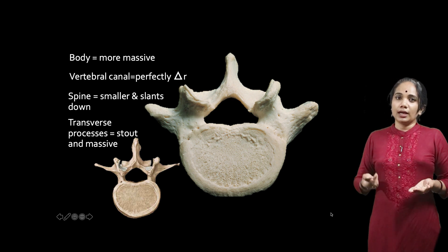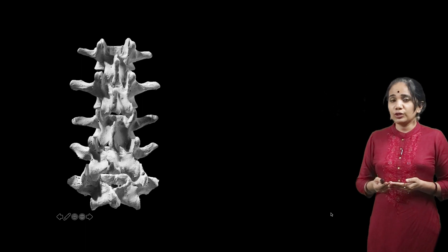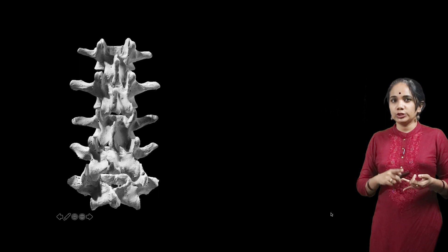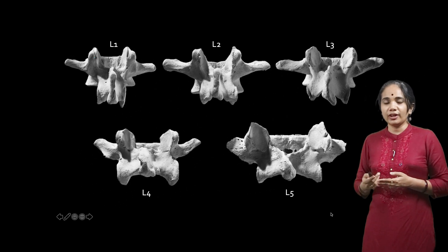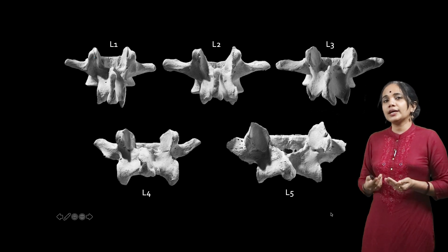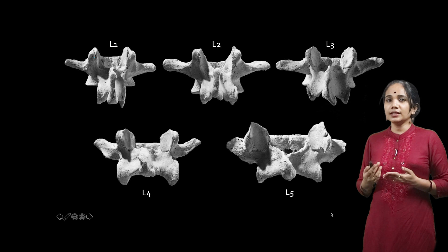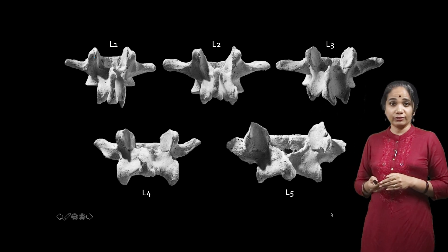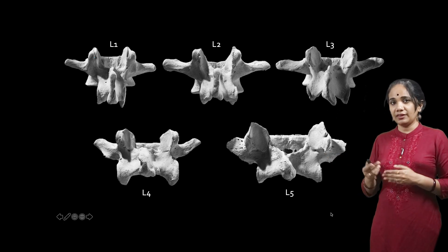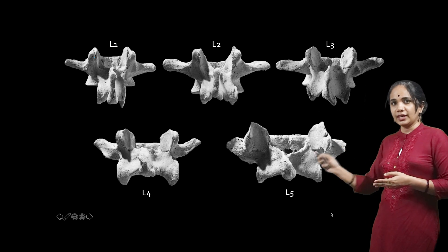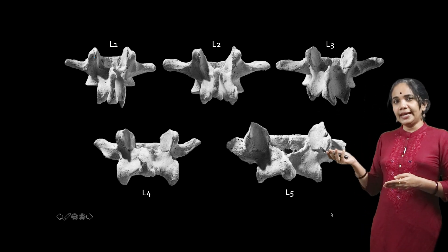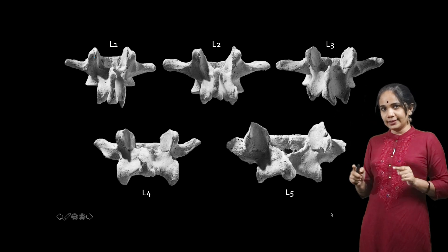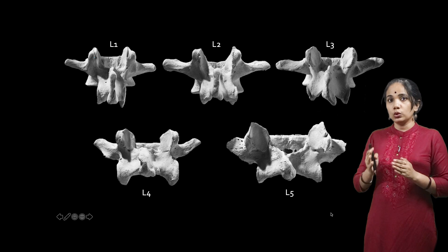In an exam, suppose you are asked to identify the number of the lumbar vertebra — you know the fifth, but what about L1, L2, L3, and L4? There is a method we use, though it is not foolproof. We try to identify lumbar vertebrae by comparing the shape formed by the superior and inferior articular processes. Looking at a posterior view of all lumbar vertebrae from L1 to L5, we can see the superior and inferior articular processes of each.